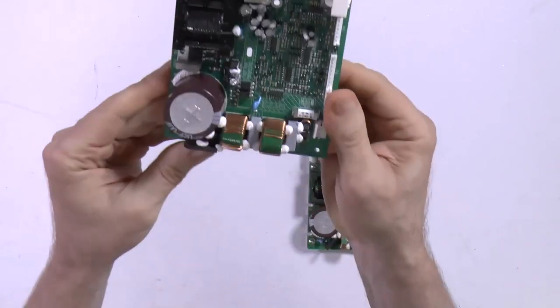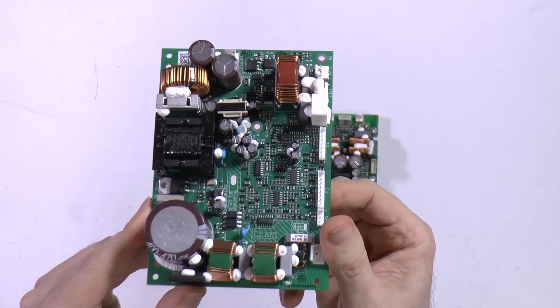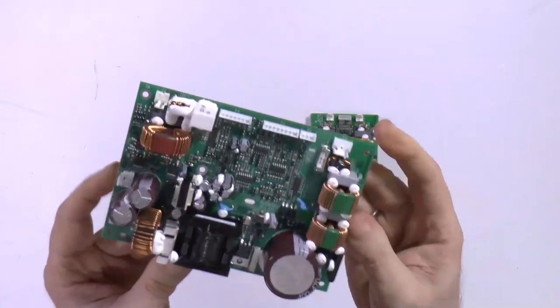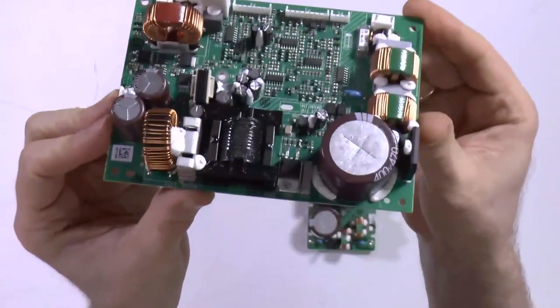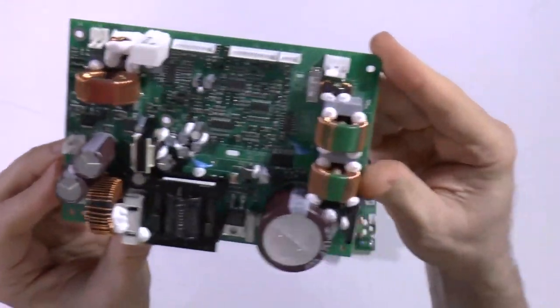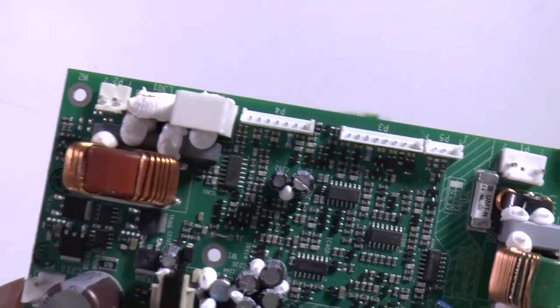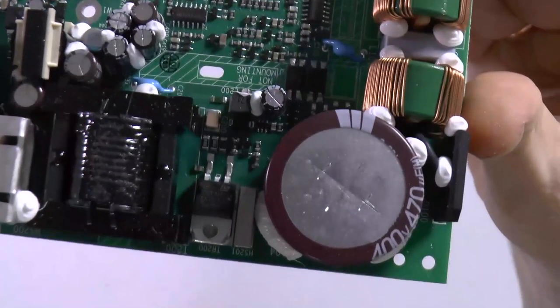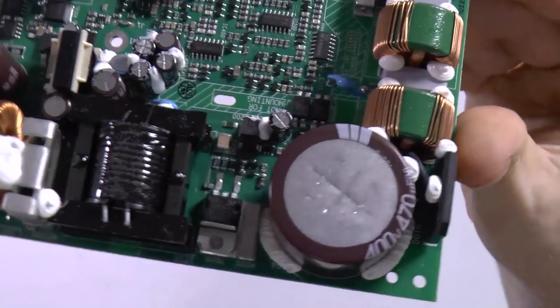Those are my boards. I have two sets of them, so I can build a stereo system. You can see that IcePower 300 AS1 is a great board all around. You can get about 250W out of it for 4 ohms, it's rated as a 300W board. But let's be conservative, there is a clean, great 250W output power.